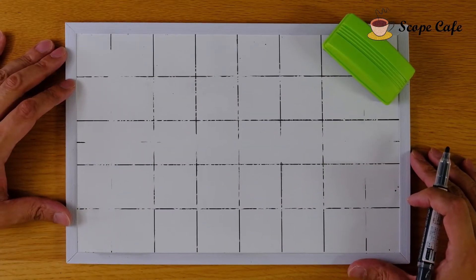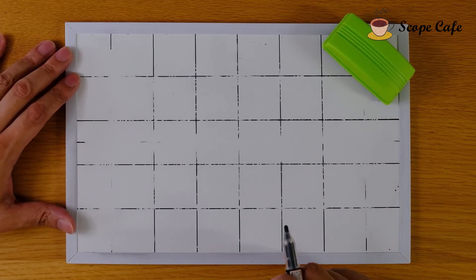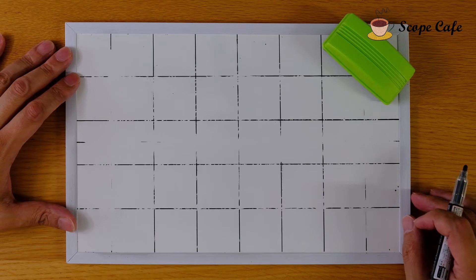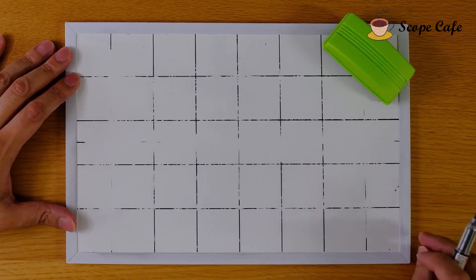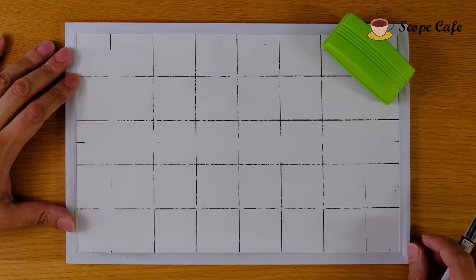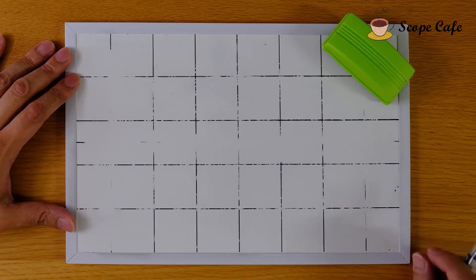Here's my whiteboard. I wanted to buy a grid type, but I couldn't find one, so I wrote lines myself. Sorry for not being clear. At first, I want you to write a graph of a 1kHz, 1V peak-to-peak sine wave.